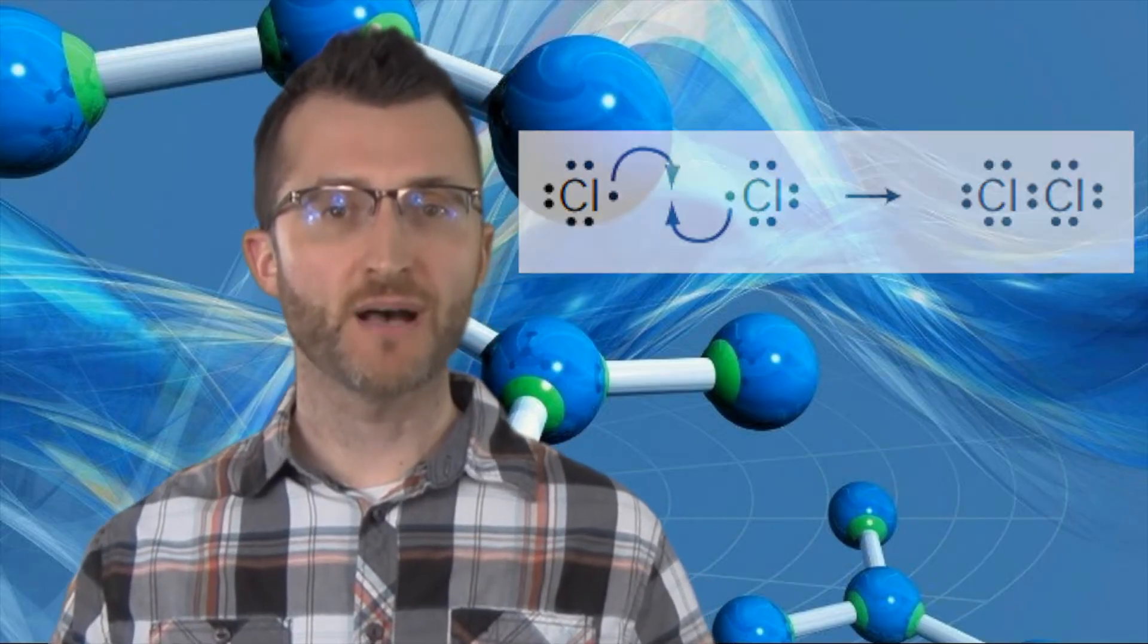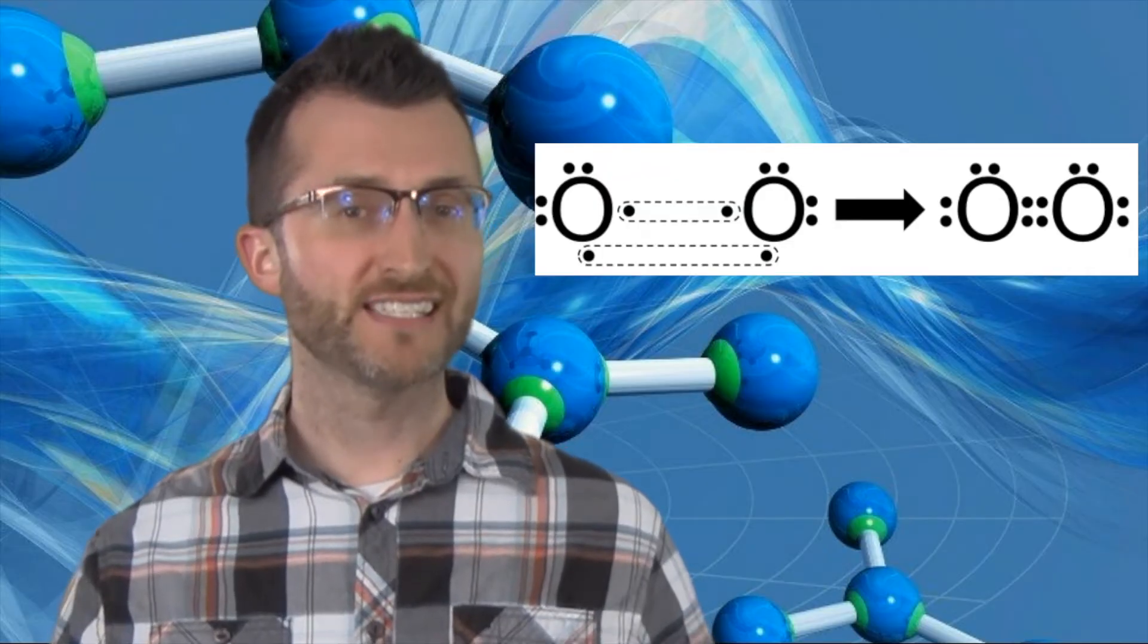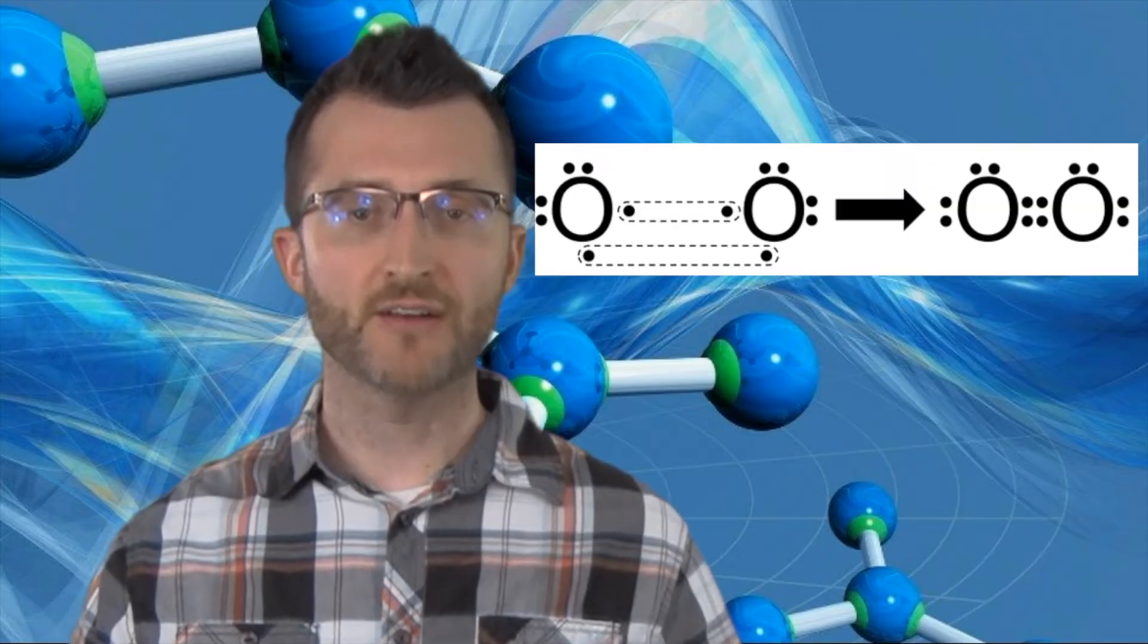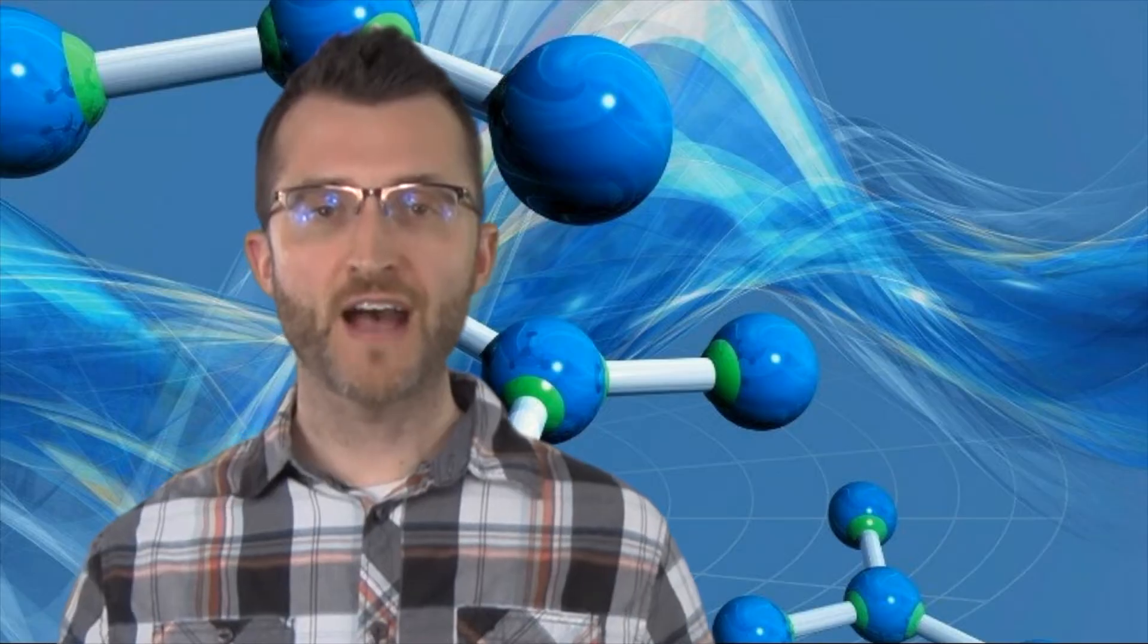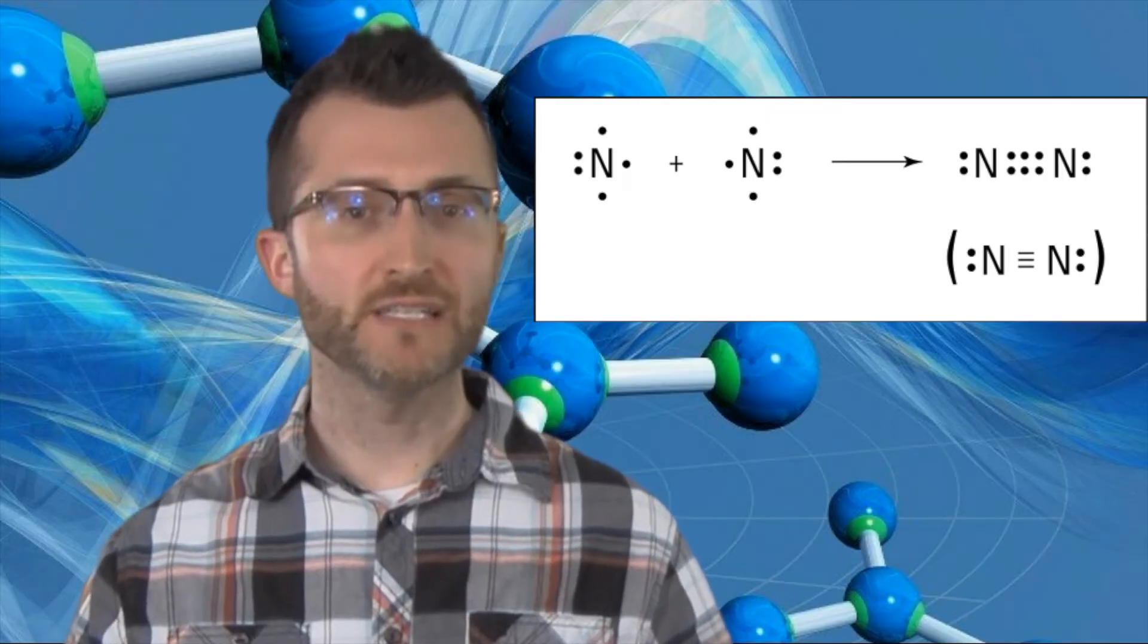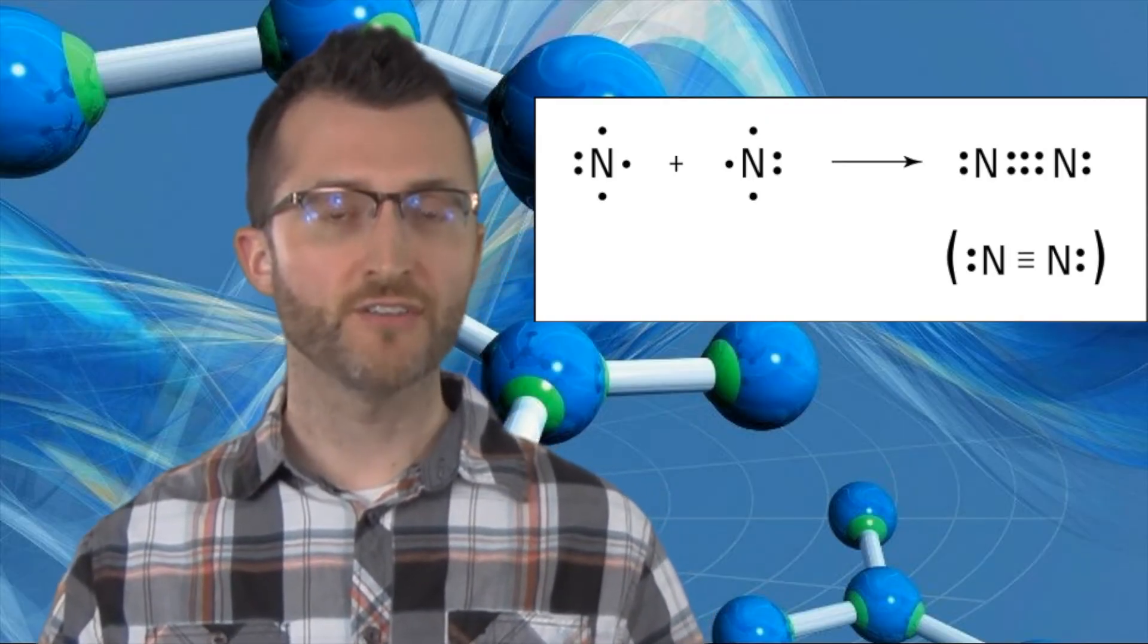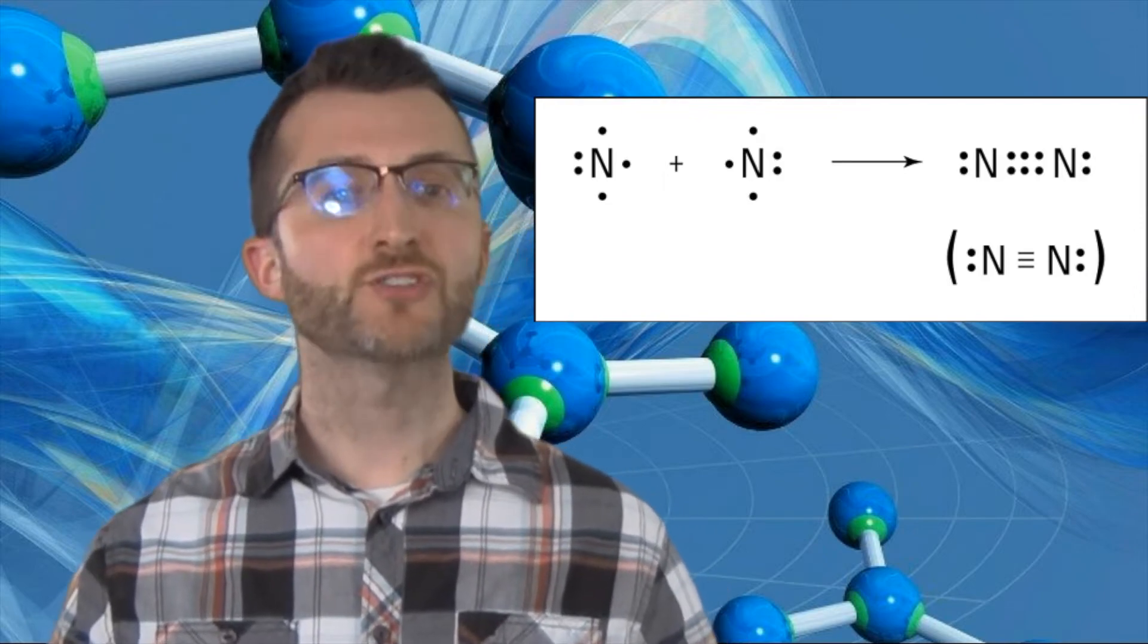If we go to O2 now, both O atoms have six valence electrons. Each needs two to fulfill the octet rule. So they're going to share two pairs in the middle. That's going to make a double bond. Finally, let's look at N2. Nitrogen has five valence electrons. Each nitrogen atom needs three more electrons to get a full outer shell of electrons. So they're going to share three pairs in the middle. We call that a triple bond.